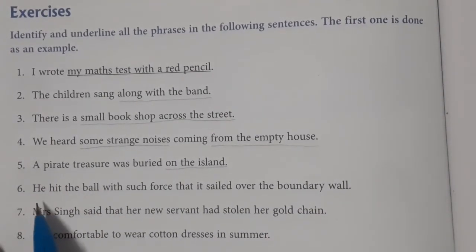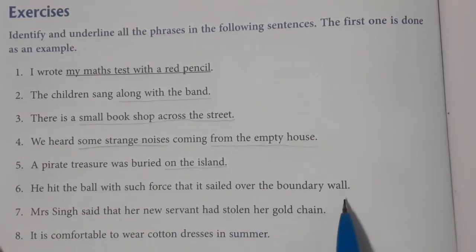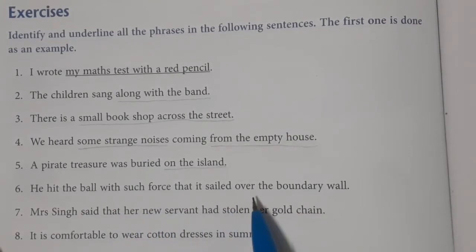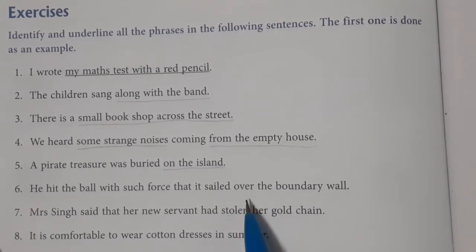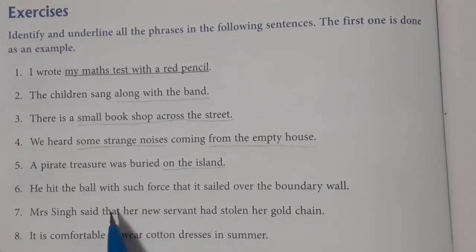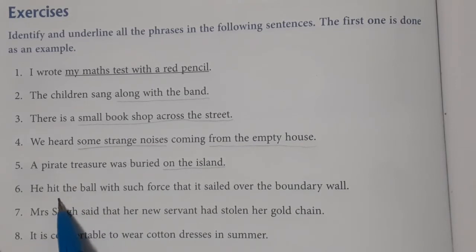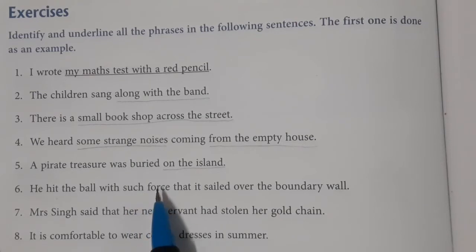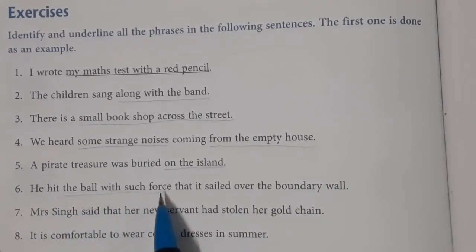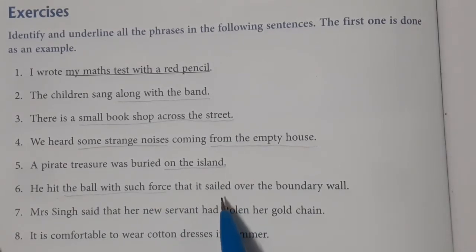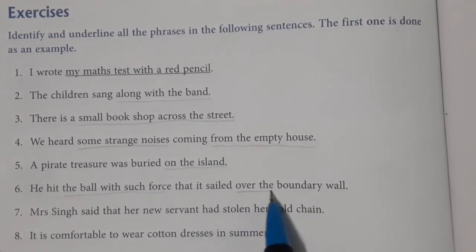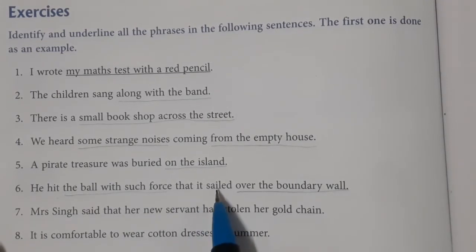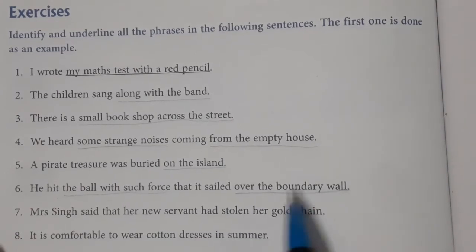The sixth sentence is: 'He hit the ball with such force that it sailed over the boundary wall.' The verb is 'hit,' and after identifying it, 'with such force' is our first phrase. Then the verb 'sailed' is identified, and after it, 'over the boundary wall' is our second phrase. So we underline both 'with such force' and 'over the boundary wall.'